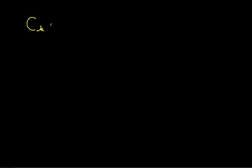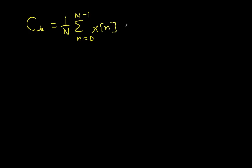The formula for C_k is 1 over N, summation over one period — here from 0 to N minus 1 — of x[n] times e to the minus j k n 2π over N. So this is just the formula for the Fourier series coefficients.